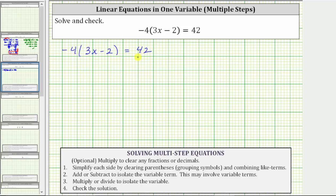The first step will be to clear the parentheses on the left side of the equation by distributing negative four. Negative four times three x is negative 12x. And now for the next product, we will think of this as negative four times negative two, which is positive eight, giving us plus eight. And this is equal to 42.